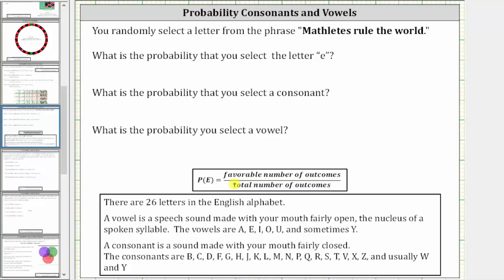Remember the probability of an event is equal to the favorable number of outcomes divided by the total number of outcomes. And since you are selecting one letter from this phrase, the total number of outcomes is going to be the total number of letters.